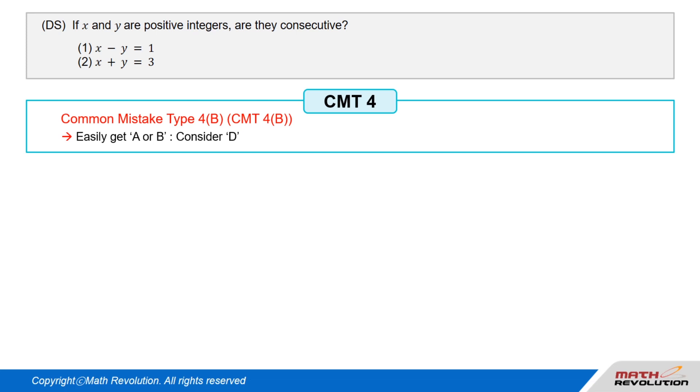Solution. Now we will solve this DS question using the variable approach. Common Mistake Type 4B. If you get A or B as an answer too easily, then consider D.